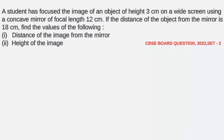Hello students, welcome back. Let's check the next question. The next question is a numerical from the light chapter and it reads: a student has focused the image of an object of height 3 centimeter on a wide screen using a concave mirror of focal length 12 centimeter. If the distance of the object from the mirror is 18 centimeter, find the values of the following: distance of the image from the mirror and height of the image.